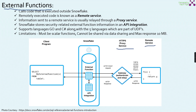The external function supports the same languages as typical user defined functions, and additionally supports Go and C# (SheHash). There are some limitations for external functions: it must be a scalar function, taking one input and returning only one output. It cannot be shared via the data sharing mechanism. The maximum response size from an external function is 10 megabytes.